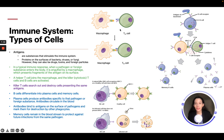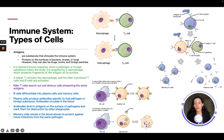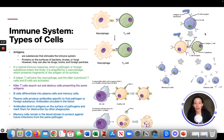In a typical immune response, the pathogen is engulfed by the macrophage and the antigen is then passed to the T cell, which activates the B cells. Killer T cells search out and destroy cells presenting with the same antigen. Natural killer cells, now aware that the antigen is in the body, search for it and kill infected cells. B cells differentiate into plasma cells and memory cells. Plasma cells produce antibodies specific to the pathogen, which circulate in the blood, bind to antigens on the surface of pathogens, and mark them for destruction by phagocytes. Memory cells remain in the blood to protect against future infection.